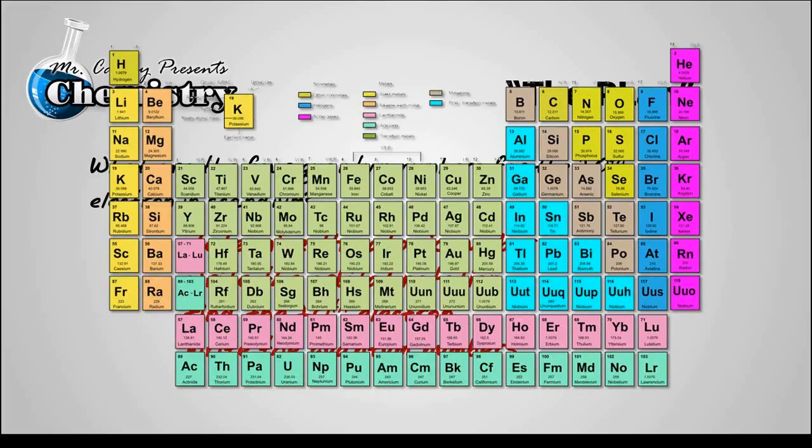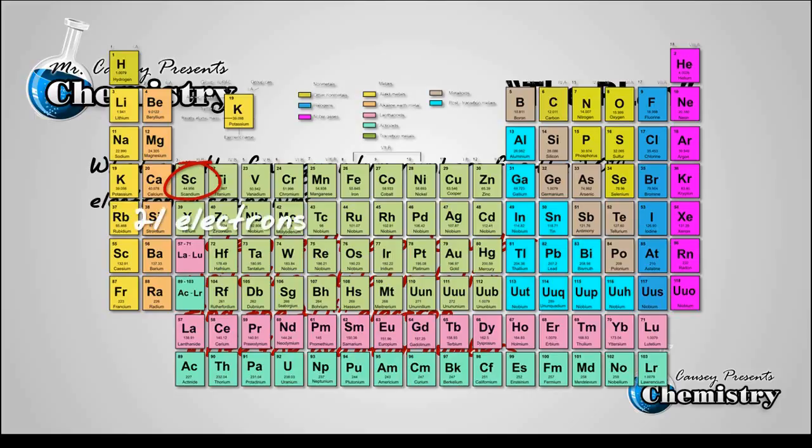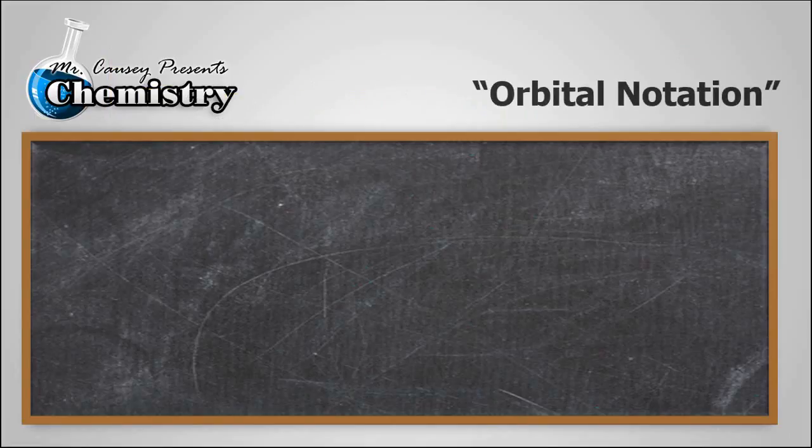Alright, well here's the periodic table. And right there is scandium at number 21. So it has 21 electrons. And let's go back to the magic blackboard and write it out.